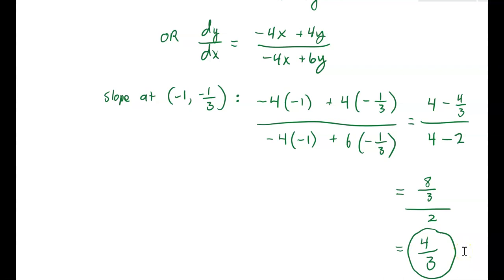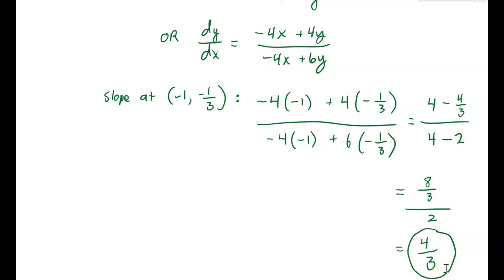Looking at the graph, that makes sense — we can tell the slope is positive there, and it looks close to positive 1, though not exactly. It's 1 and one-third, so the answer makes a lot of sense. That's implicit differentiation: if you don't have a function, you use this approach and end up with a formula for computing the slope at any point on the curve. Whatever point you want, just plug in the x and y coordinates. Now let's look at an application.